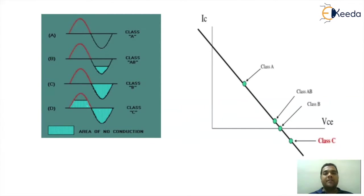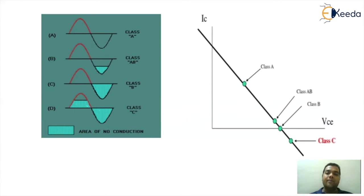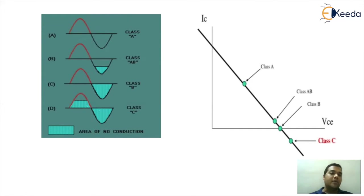Looking at the diagrammatic representation of Q-point position on IC versus VCE, which is essentially the position of the Q-point on the load line: the Q-point of Class A lies at the center of the load line, Class B lies in the cutoff region on the x-axis, and Class AB is slightly higher than B but away from A. Class C has the Q-point placed below the cutoff region. Class A gives a full cycle output, Class B gives a half cycle output, and Class C gives less than a half cycle output.